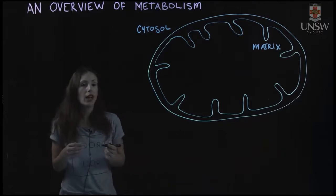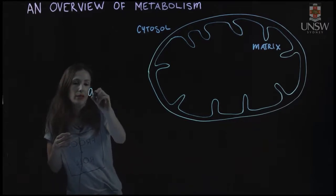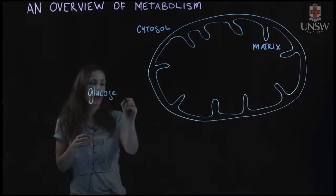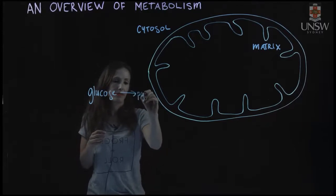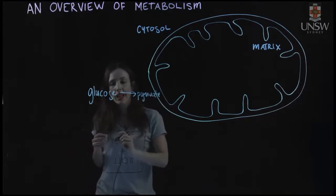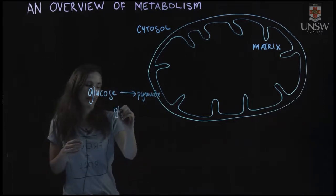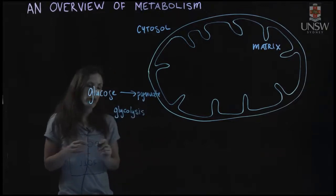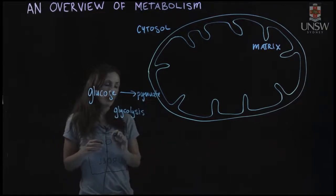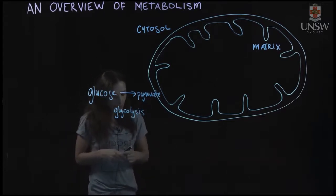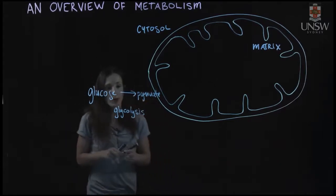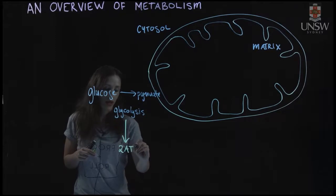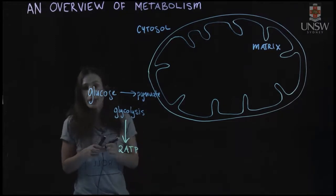If we look at glucose, we know that glucose is broken down to pyruvate and that's done in glycolysis. Glycolysis is about splitting sugar, so we go from a six-carbon molecule to two three-carbon molecules. That's a reaction that produces two ATP net.